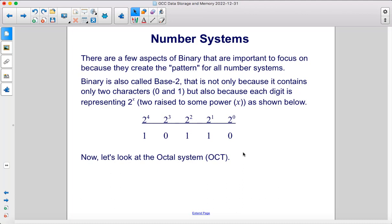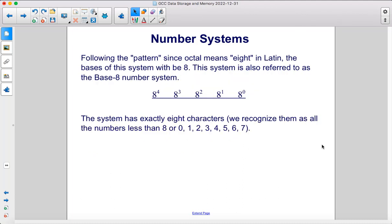Now, let's look at the octal system. Following the pattern, since octal means 8 in Latin, the bases of this system will be 8. This system is also referred to as the Base 8 number system. This system has exactly 8 characters, and we recognize them as all of the numbers less than 8, including 0, 1, 2, 3, 4, 5, 6, and 7.